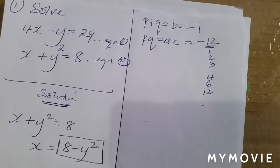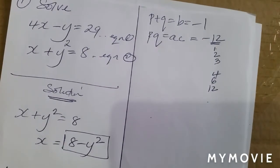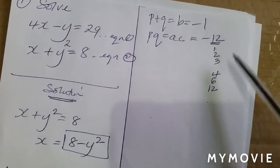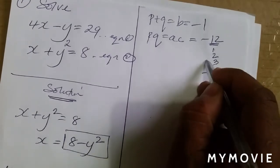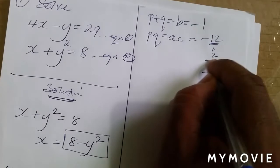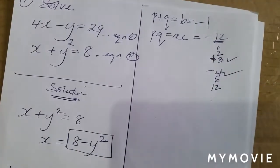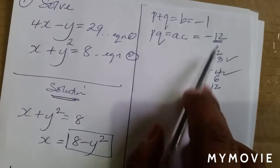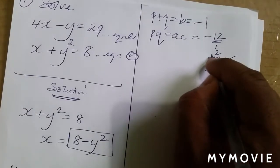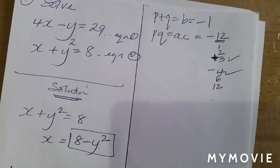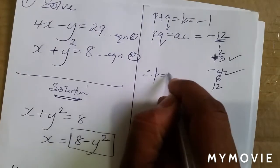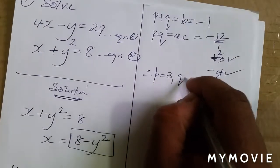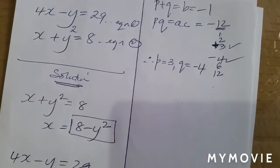Sorry about the light — so the question is: what two numbers when added give negative 1, and when multiplied give negative 12? That would be negative 4 and positive 3. Negative 4 plus 3 gives negative 1, and negative 4 times positive 3 gives negative 12. So p is positive 3 and q is negative 4.